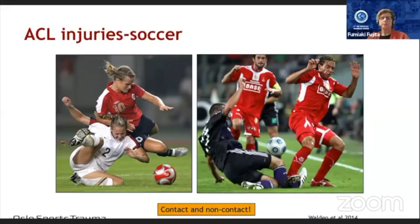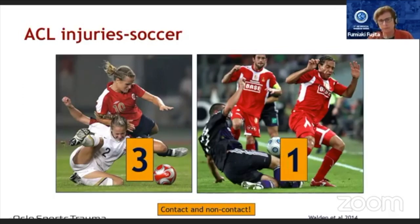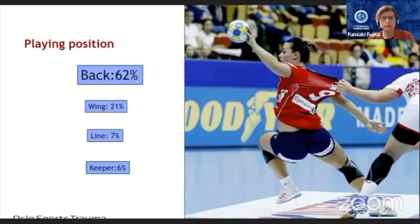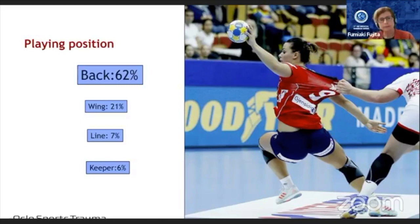Comparing with football or soccer, the sex distribution is three to one, so numbers are more equal, and in football we see both contact and non-contact ACL injuries. Regarding playing position in handball, back players have the highest risk of getting an ACL injury compared to wing players, line players, and goalkeepers.